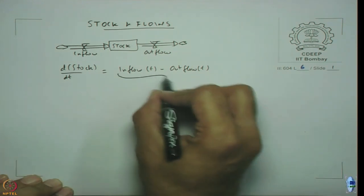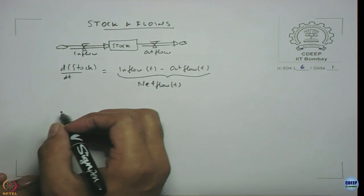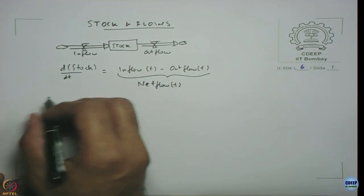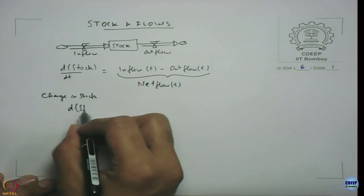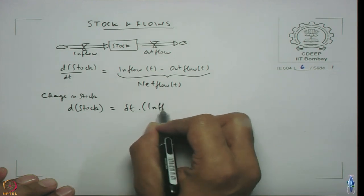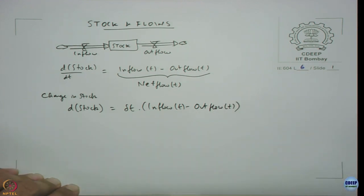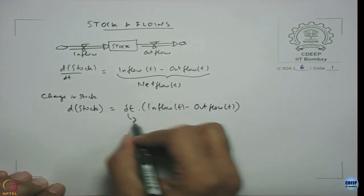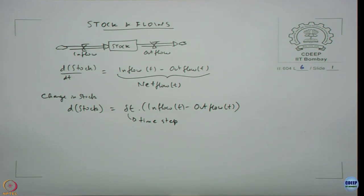This is also known as net flow at particular point in time. If you want to actually see what is the change in stock, change in stock d(stock) can simply be delta t times your inflow at time t minus your outflow at time t. When we are actually trying to simulate it, this dt represents your time step or time interval and we are measuring the change in stock during that particular time, that is the amount of stock that is changed from its previous value, that is amount added or subtracted from the stock.